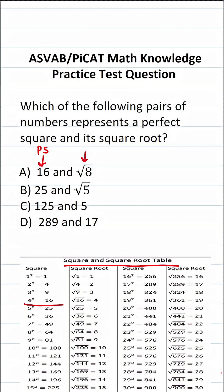We can see that 16 is in fact a perfect square. That said, the square root of 16 is 4, not square root 8, so A is not correct.